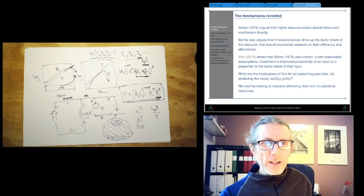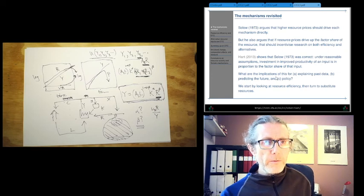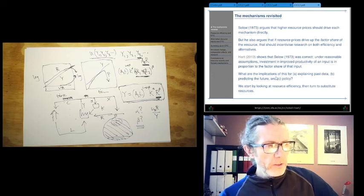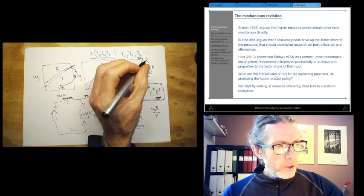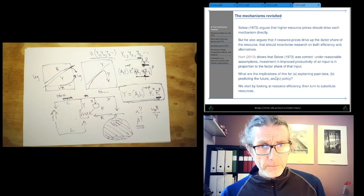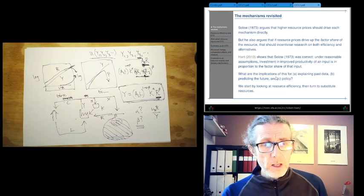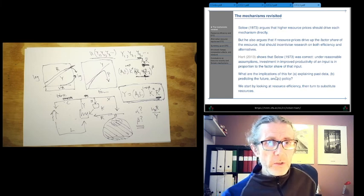Solow in 1973 argues that high resource prices should drive each mechanism directly. He also argues that if resource prices drive up the factor share of the resource, that should incentivize research on both efficiency and alternatives. So research to drive up A2, research to drive up AR, and so on.